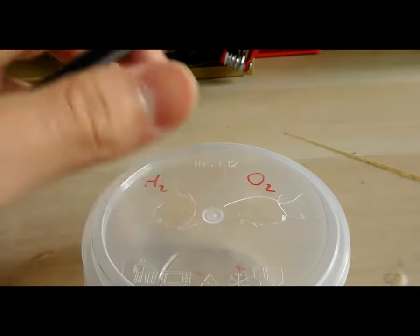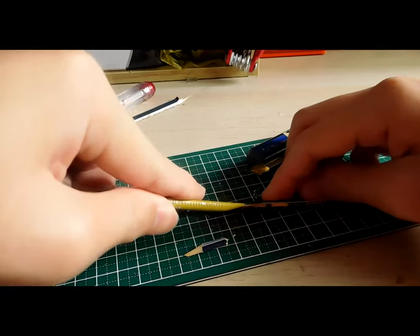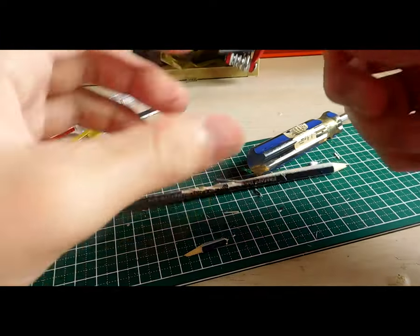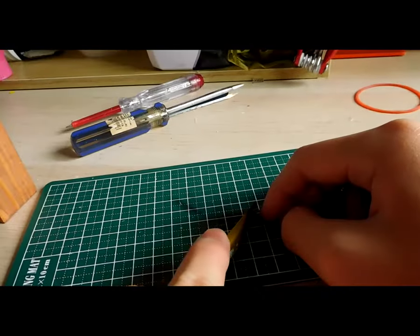First question in mind: how to get the graphite out of the pencil? It can conduct electricity because graphite has delocalized electrons. Graphite is soft and slippery so we can just basically get this thing out.